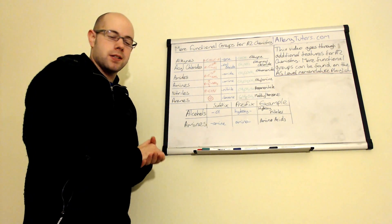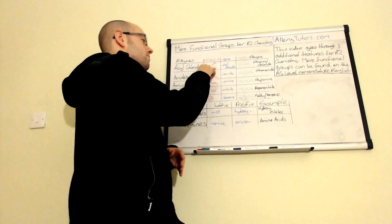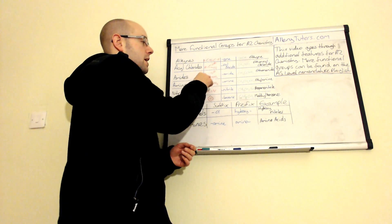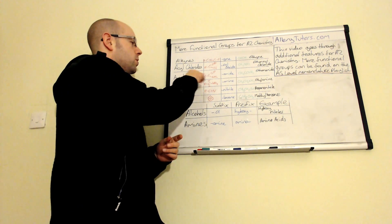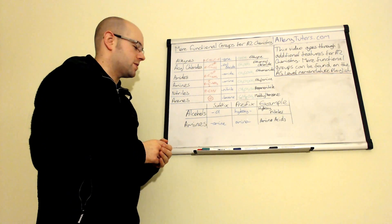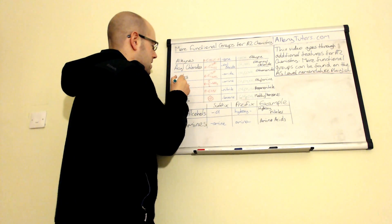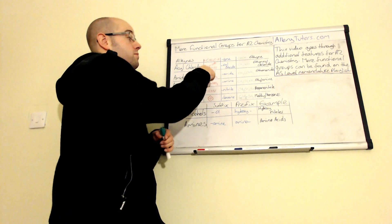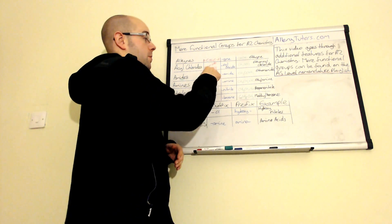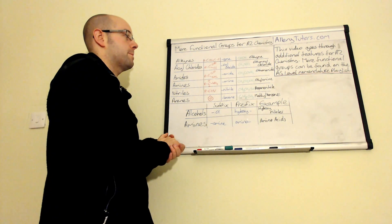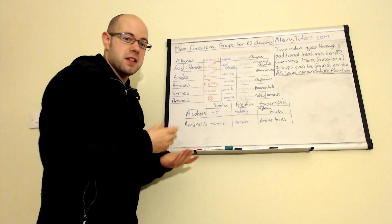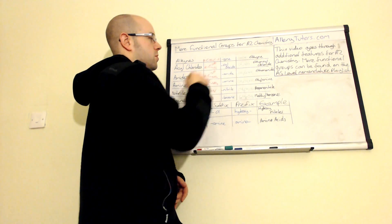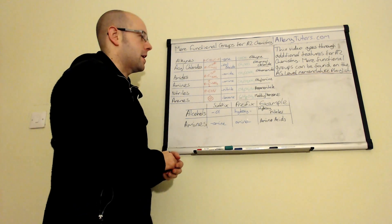The next type of group is amides. Amides resemble something similar to a carboxylic acid, except instead of the OH, we have an NH2. A good way to remember this is that 'amide' has the 'id' in there, as if it's come from a carboxylic acid — so it looks like part of a carboxylic acid. The ending is simply 'amide', so for example, with two carbons, we call it ethanamide.